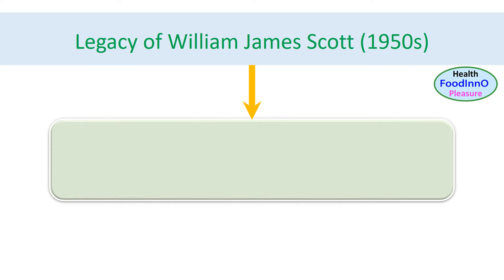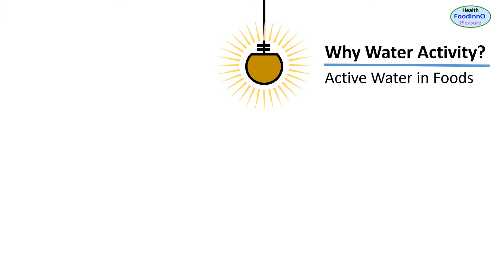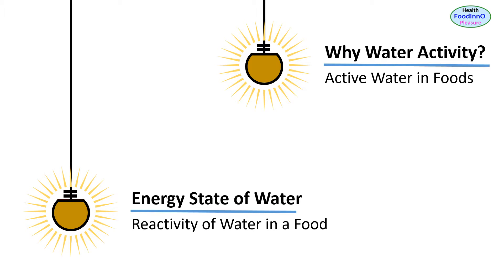Any living organism needs water to survive and grow. The question is: why use water activity for microbes rather than total water content? In the 1950s, William James Scott, an Australian biologist, clearly identified that active water can be correlated well with microbial growth in foods rather than the total amount of water. Water activity indicates the energy state of water — it is an indication of the active water in foods.